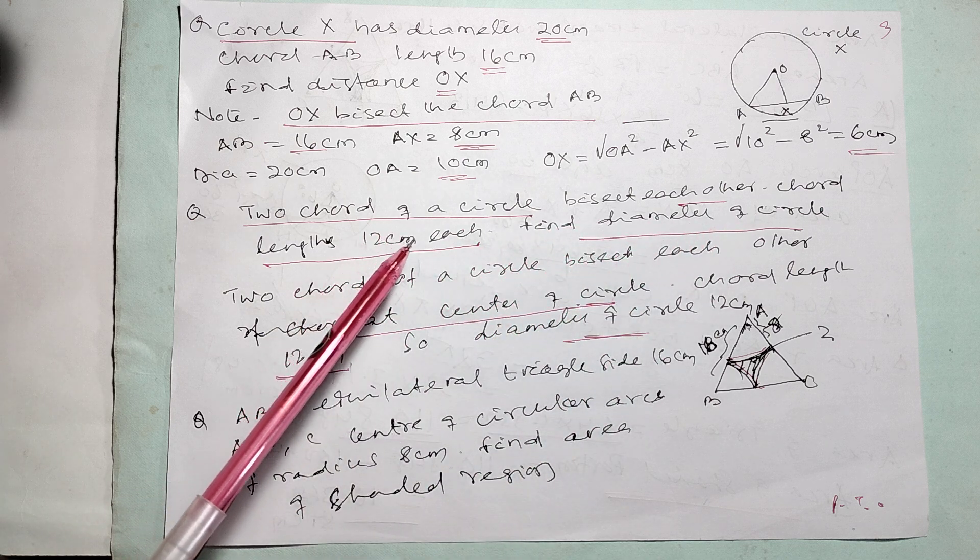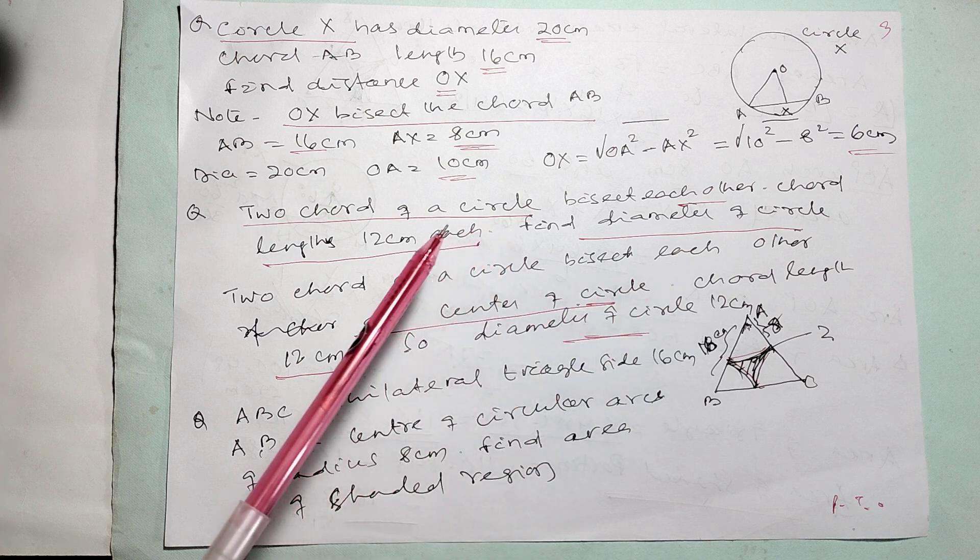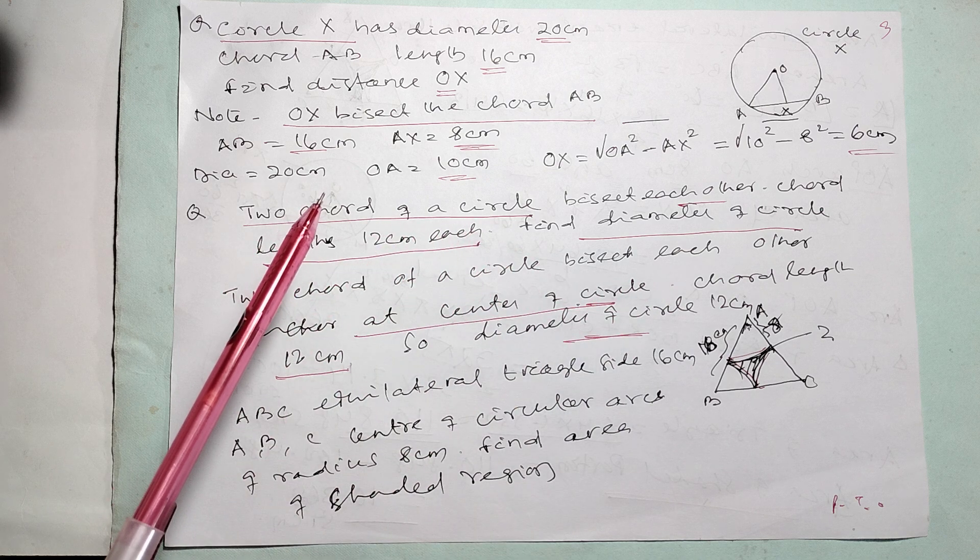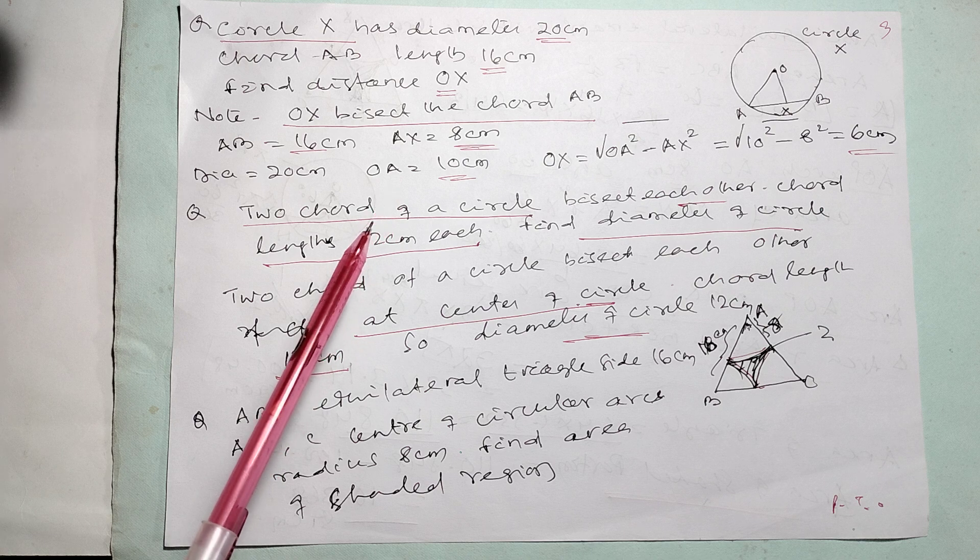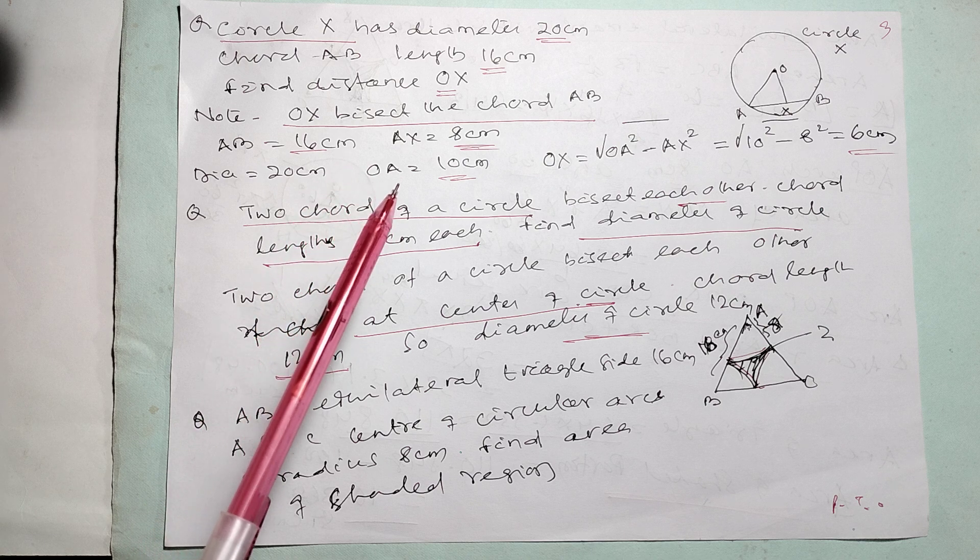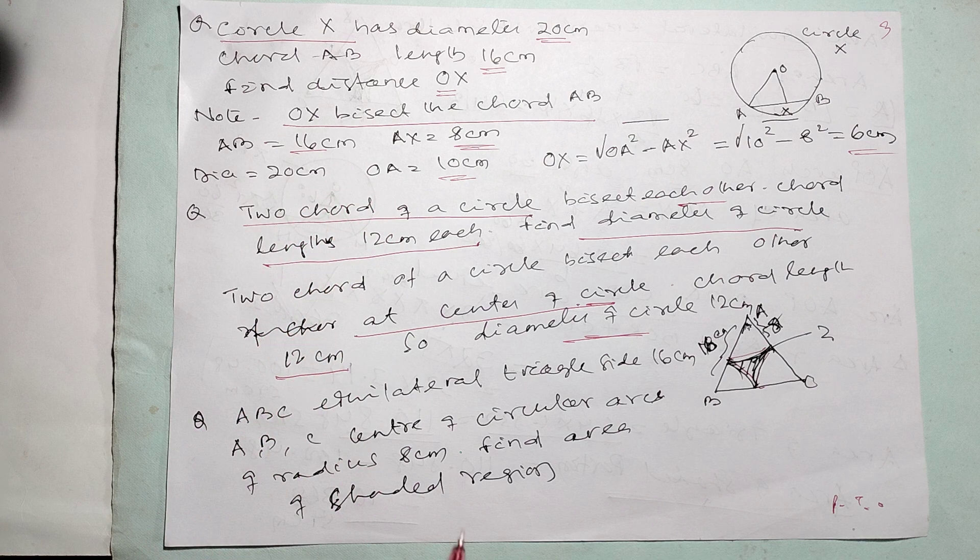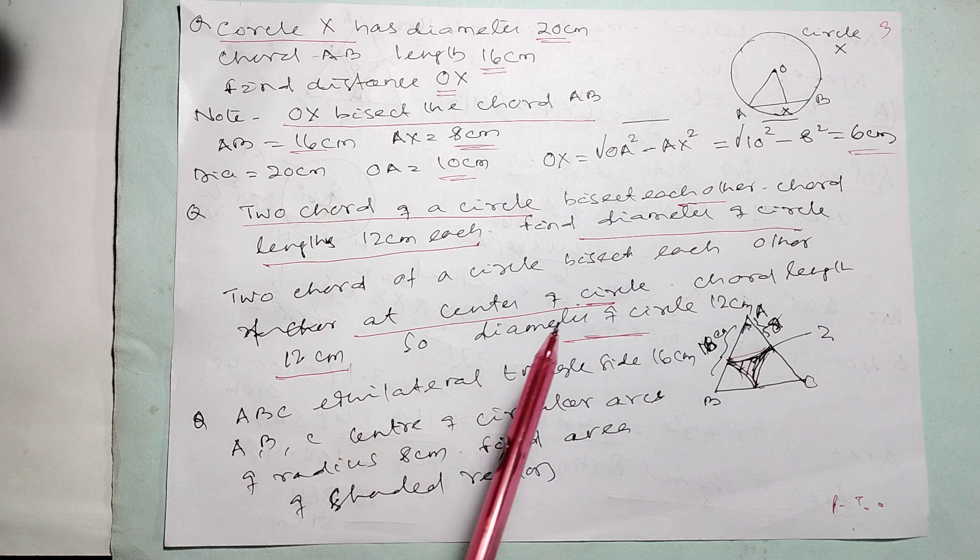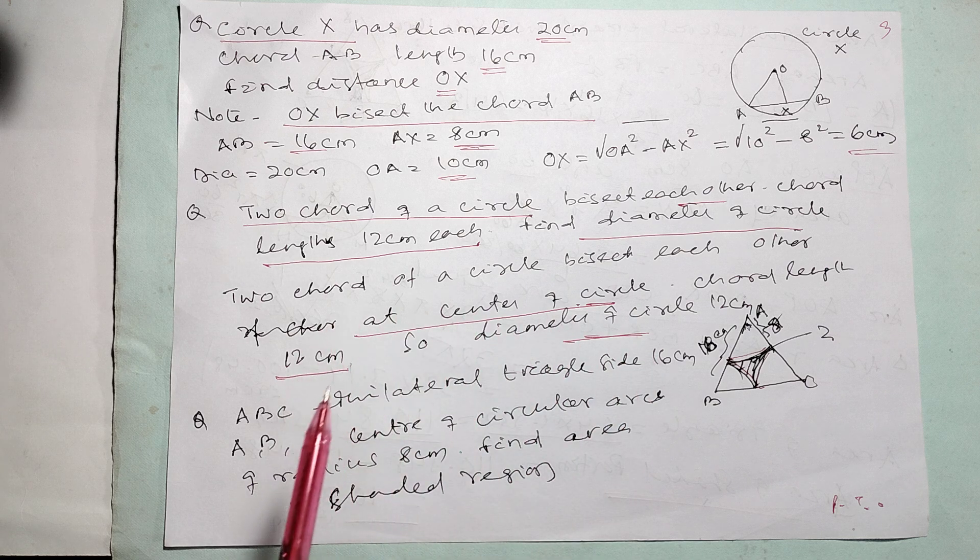Two chords of a circle bisect each other. Chord is 12 centimeter. Find diameter of circle. Diameter of circle is nothing. Only when two chords intersect each other only at the point of center. So, the diameter is 12 centimeter.